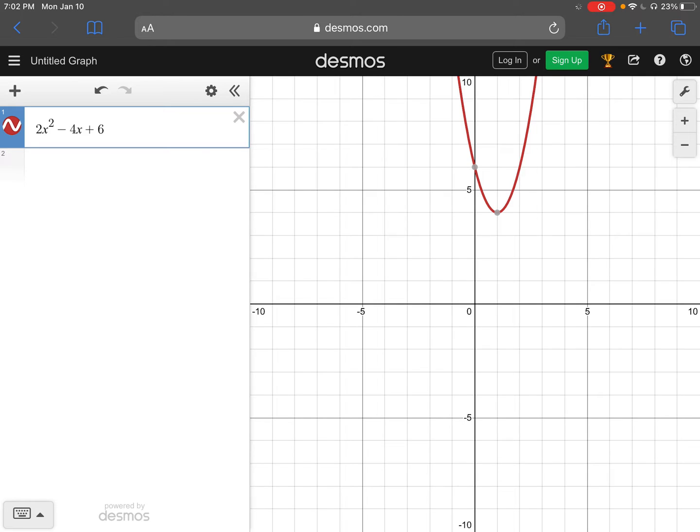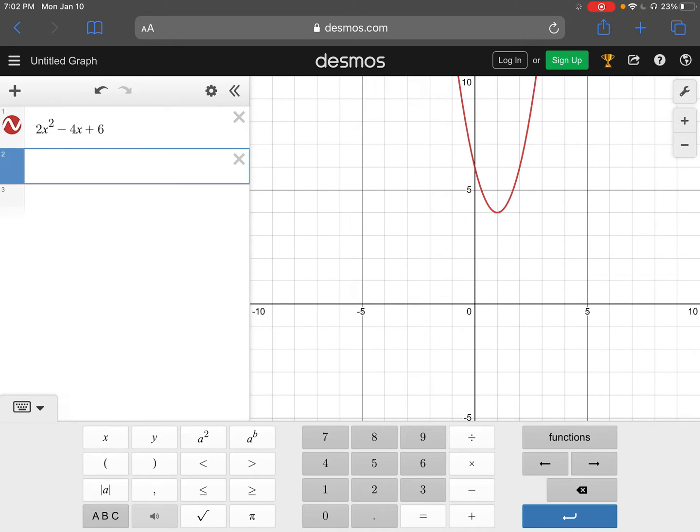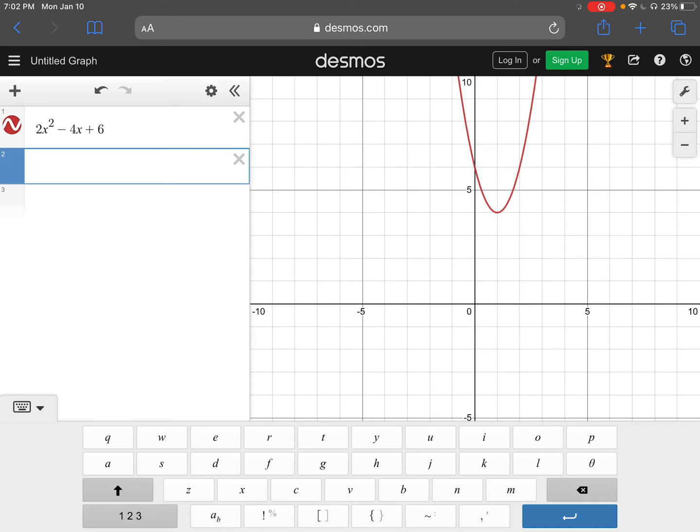Desmos can find the greatest common factor for you of numbers. It cannot find it for variables. But how you could find your GCF of this function is by typing in GCD. So not GCF, they use a different letter.